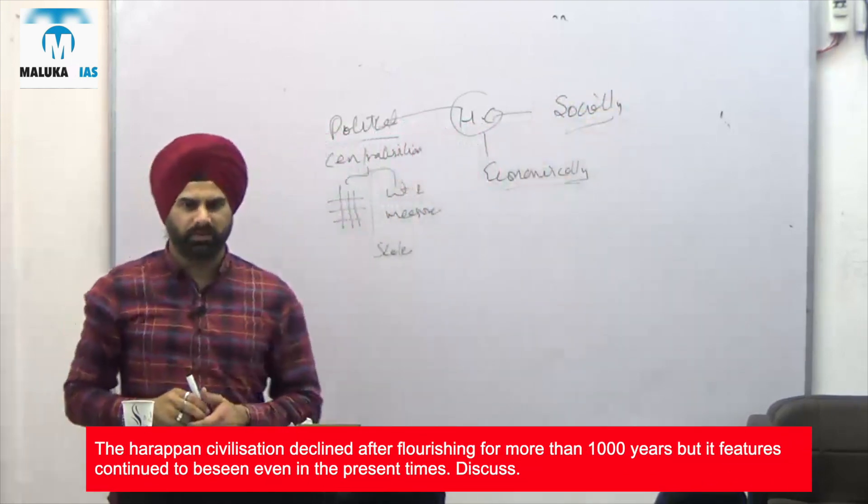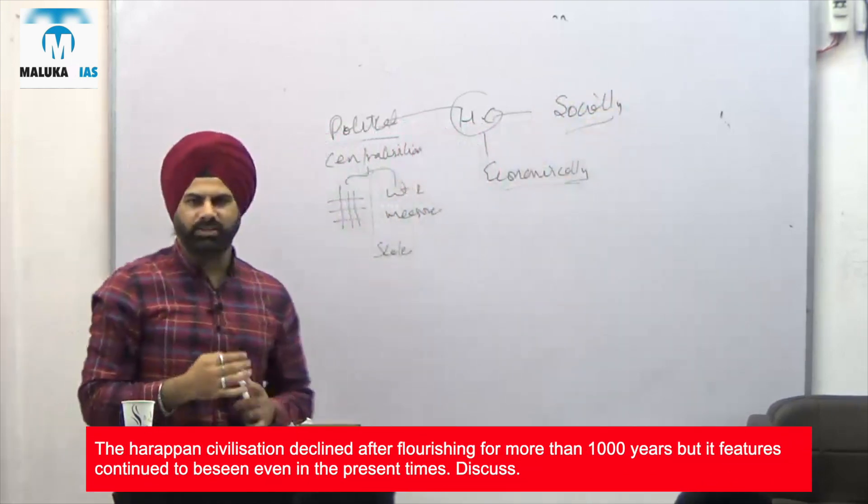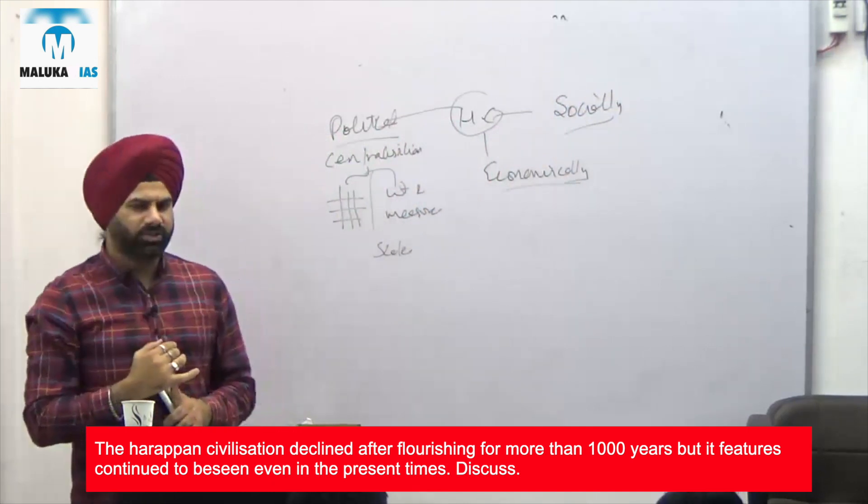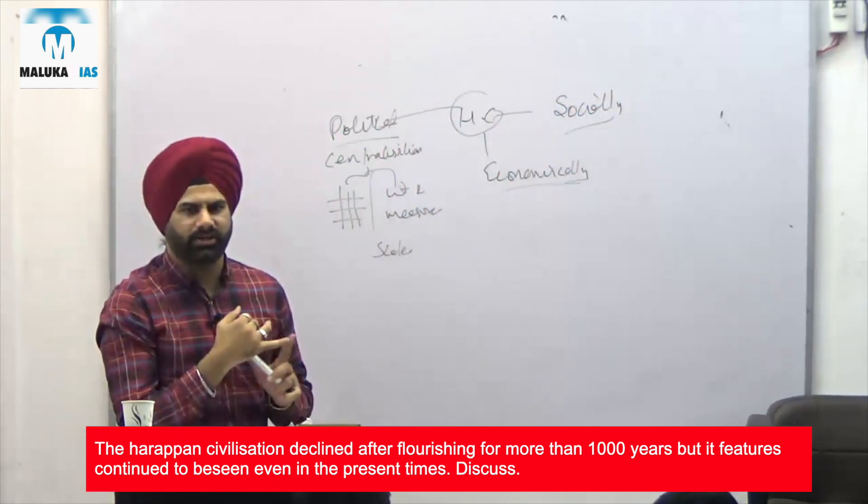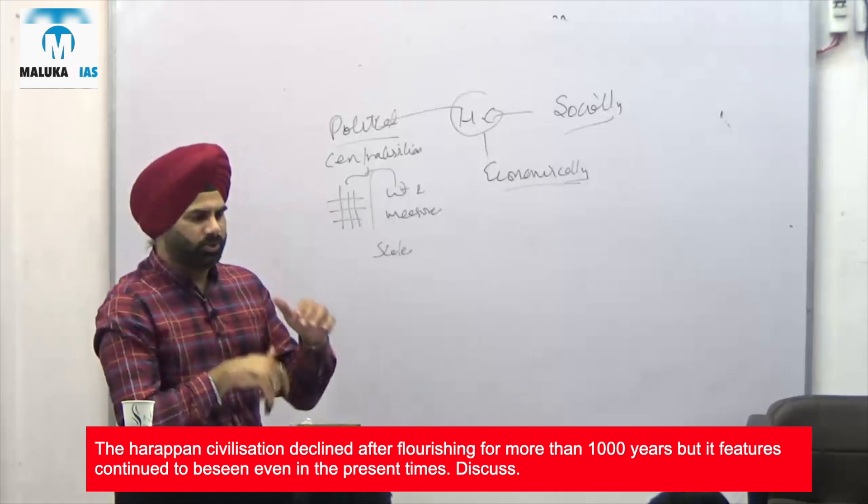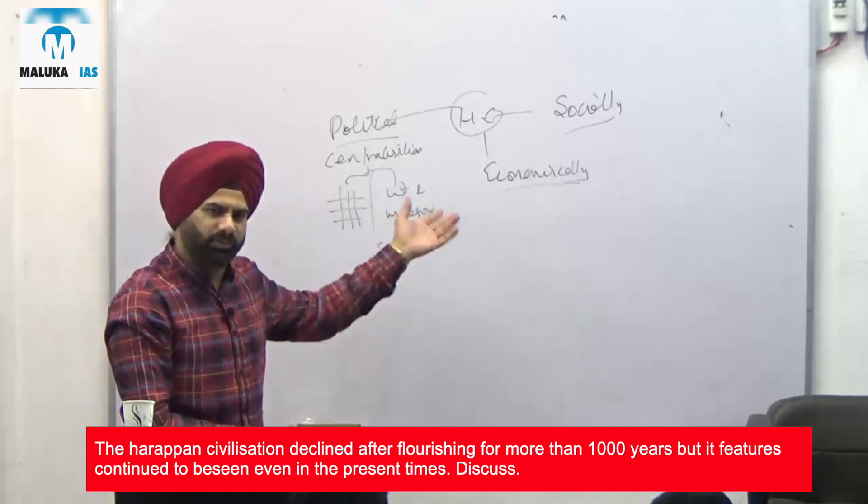They were having trade relations with other countries - intra-trade, external trade, internal trade, local trade with Mesopotamia, with the Persian Gulf. Same is being done now also.